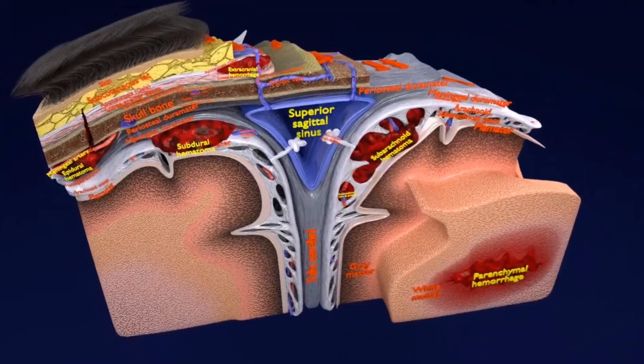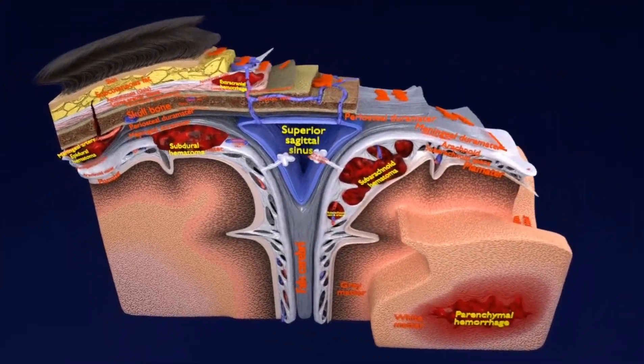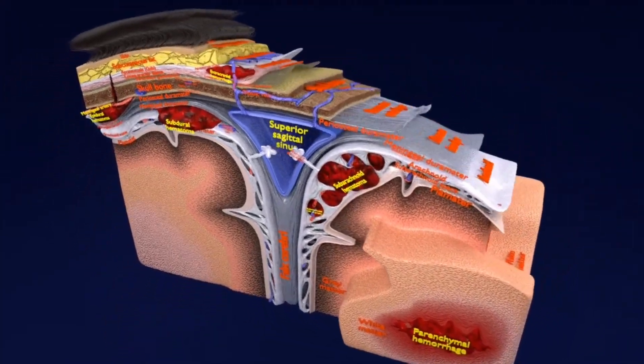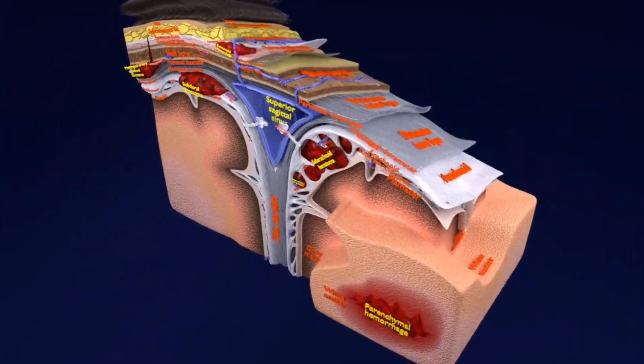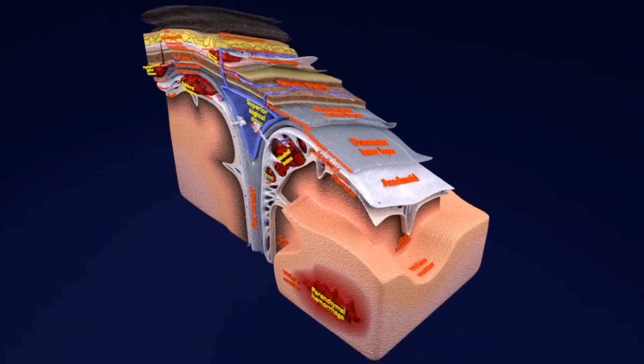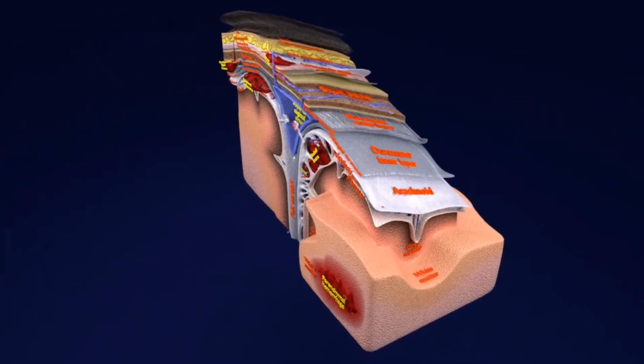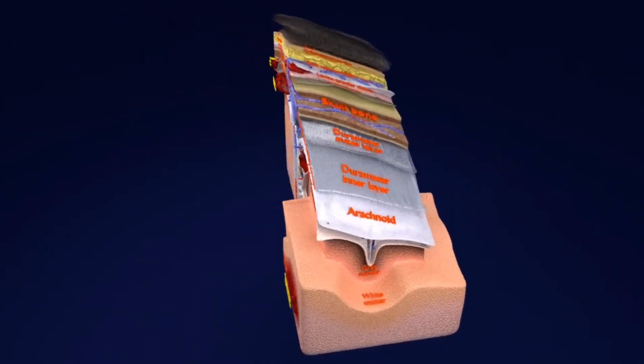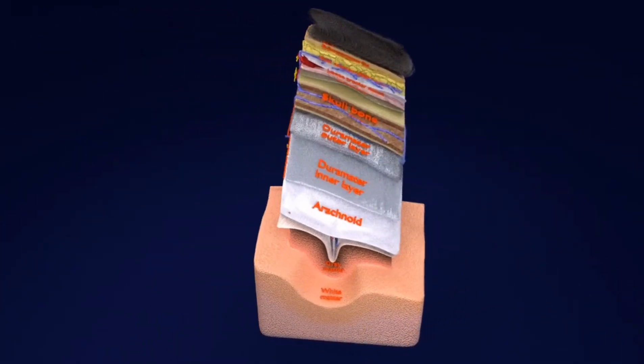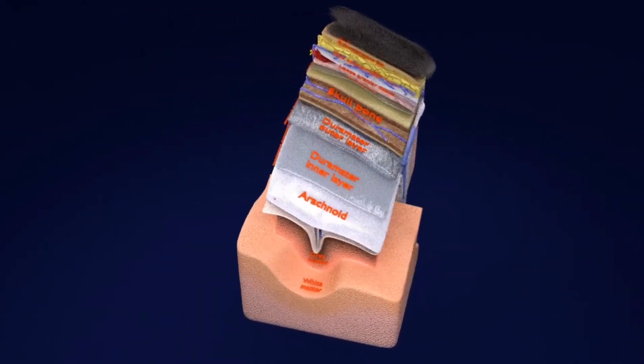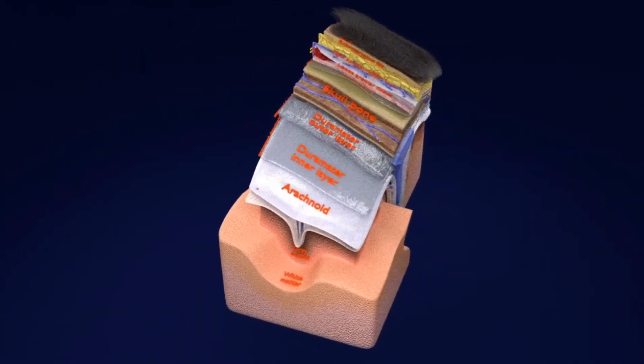This very important video depicts the various types of hemorrhages seen in the head. To understand this video thoroughly, you need to have background information of the layers of the head.